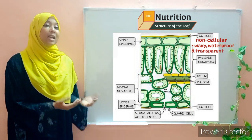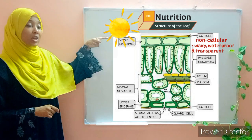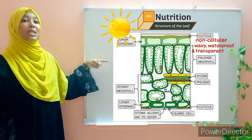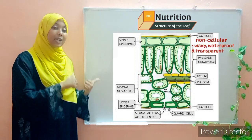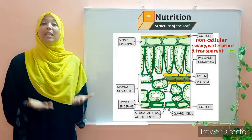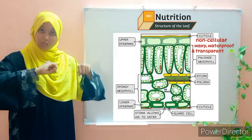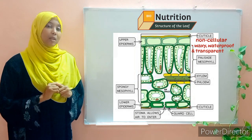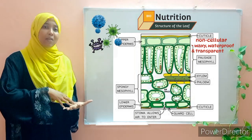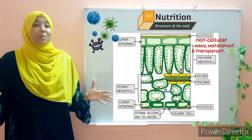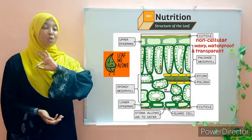Another characteristic of the cuticle is that it is transparent, which allows light to pass through to the photosynthetic tissues where photosynthesis takes place. The cuticle also has a protective function — it protects the inner tissues from mechanical (physical) damage and from the entry of pathogens, which are microorganisms that cause diseases. Those are the three functions of the cuticle.